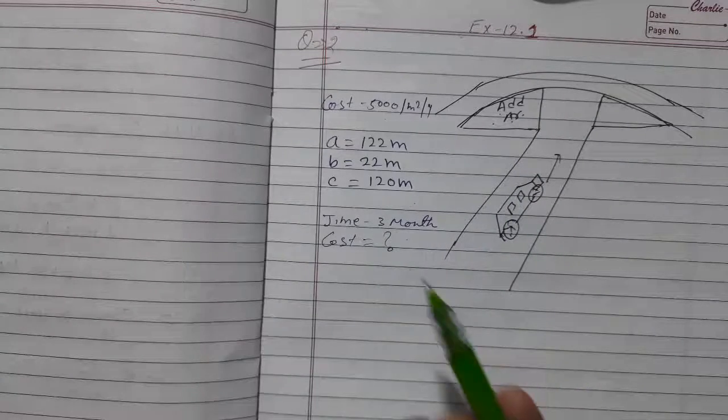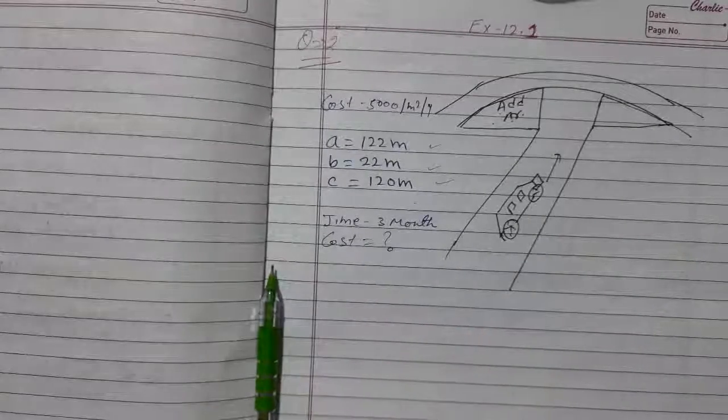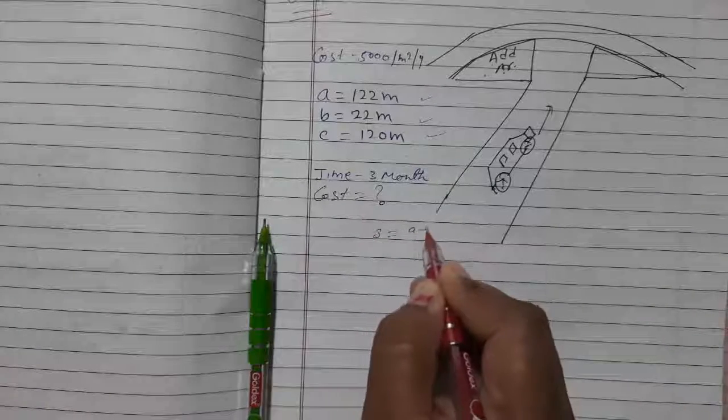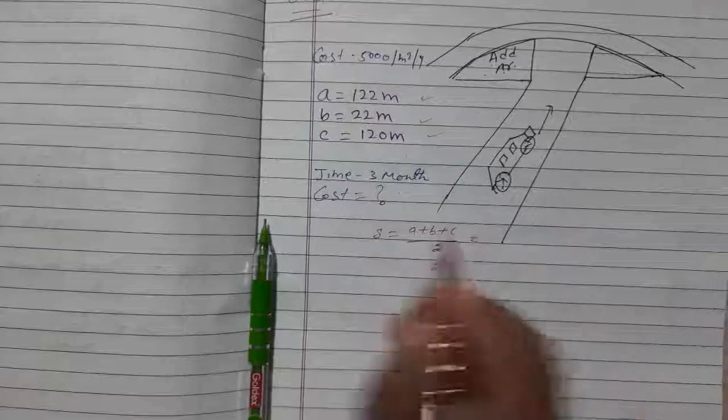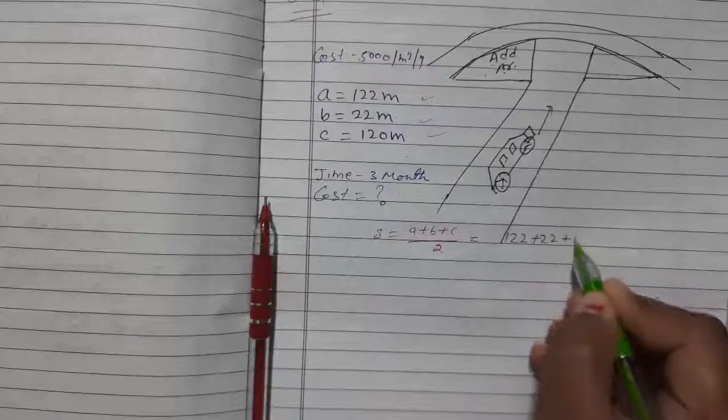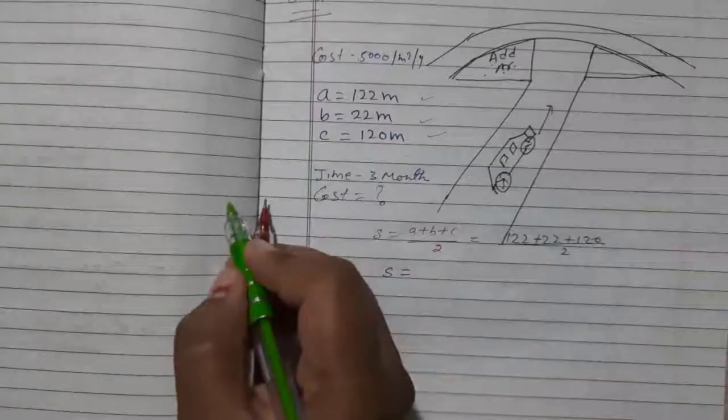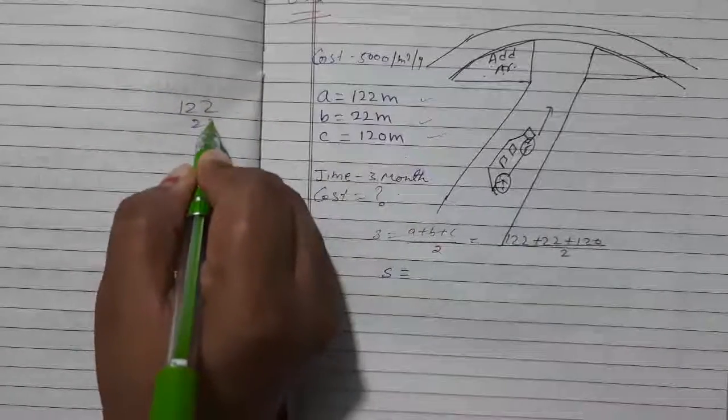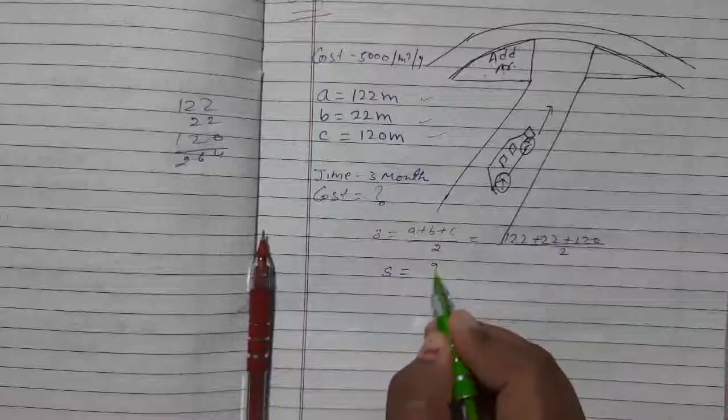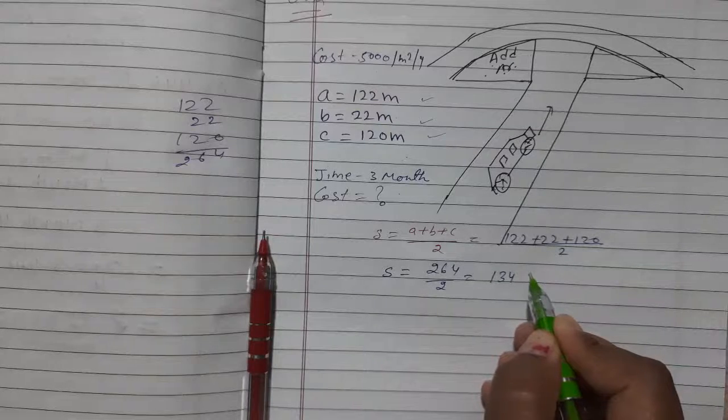As the dimensions are given, first we will find out the semi-perimeter. As we know, the formula of the semi-perimeter is a plus b plus c divided by 2. That will be equal to 122 plus 22 plus 120 all upon 2. So it will be 264 upon 2, that is equal to 132 meter.